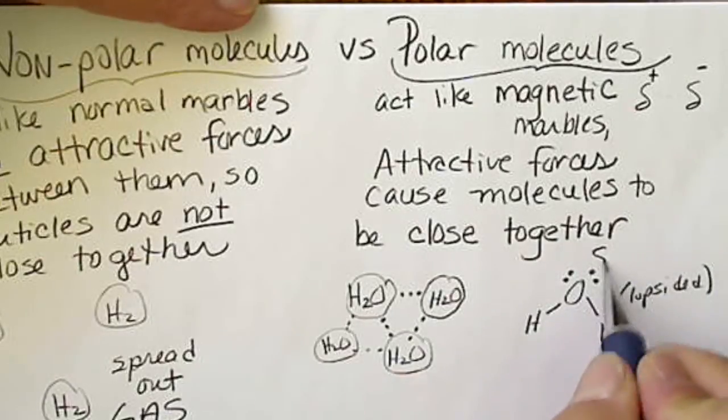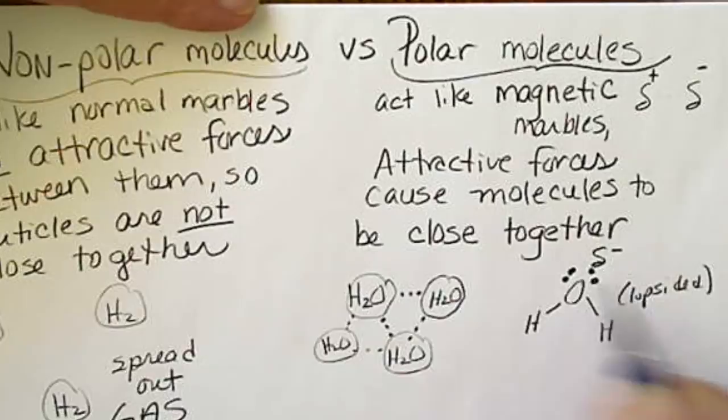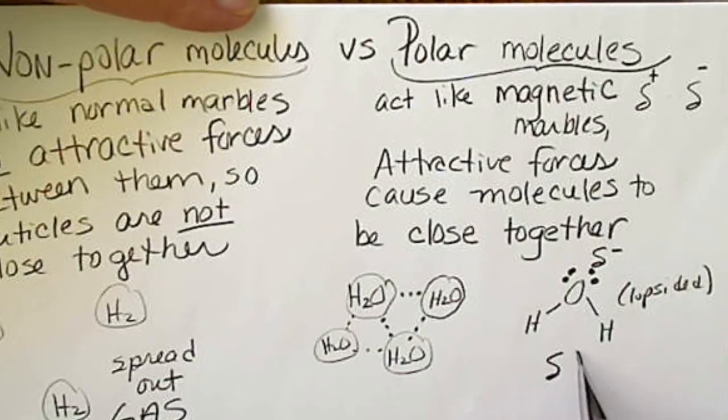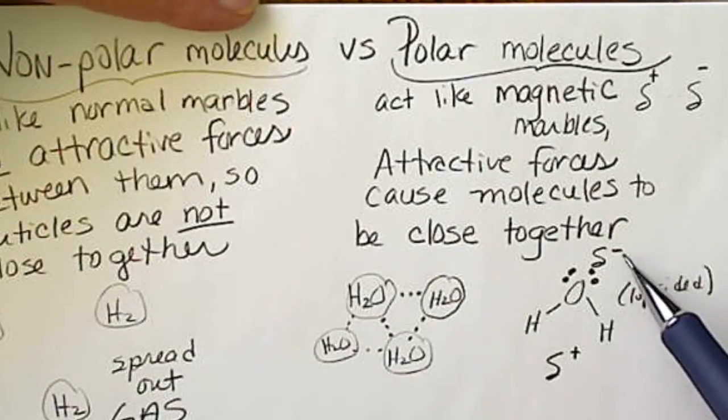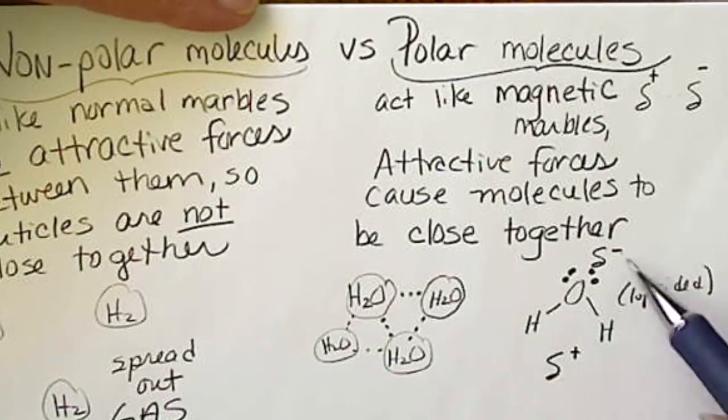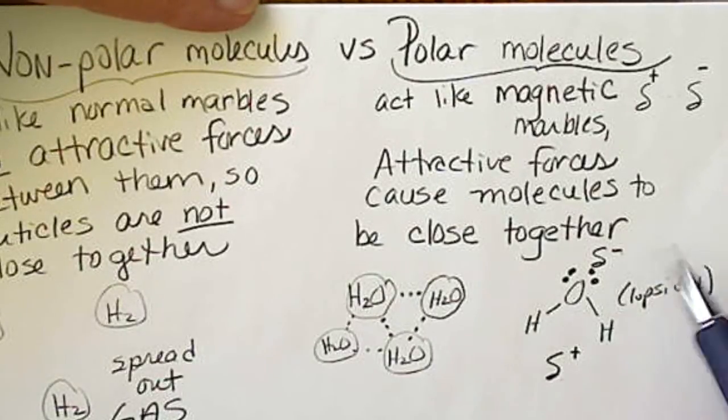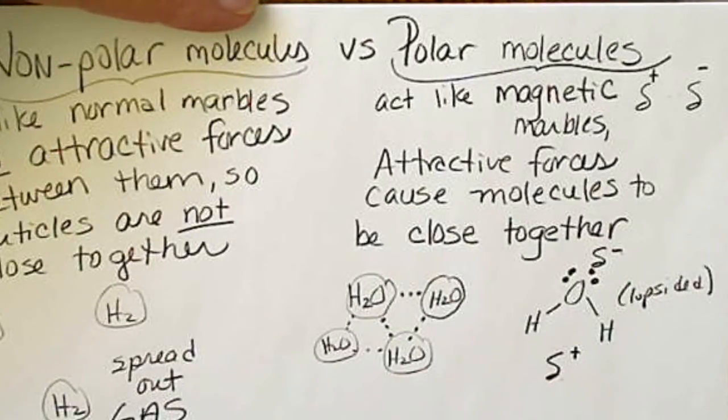We have this negative side over here where all these extra electrons are. And then this side of a water molecule would be more positive. It's not completely positive like an ion, but it's more positive on this side than the other side. Because of this lopsided molecule and the electrons being more on one side, this ends up being polar.